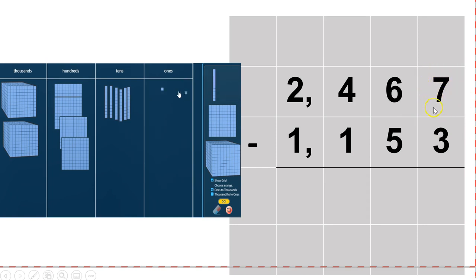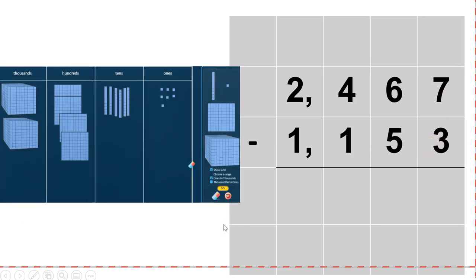5, 6. And then finally, our ones place — our 7 ones: 1, 2, 3, 4, 5, 6, 7. So I want to go over to the ones, and I'm going to take three away — one, two, three — and that's going to leave me with four.